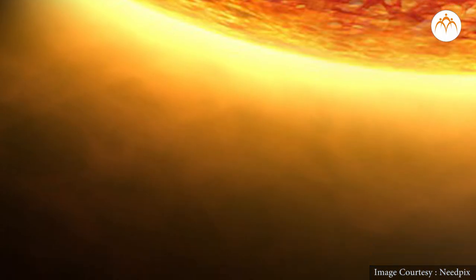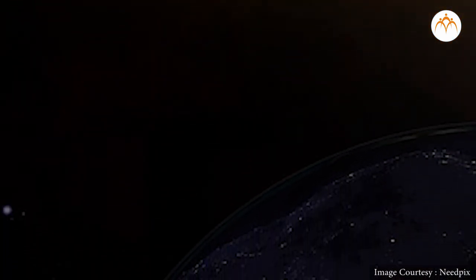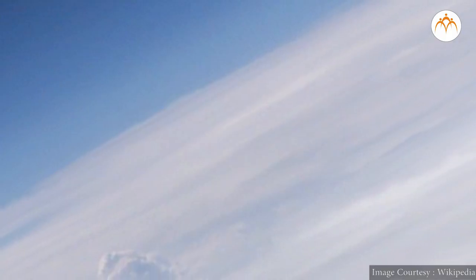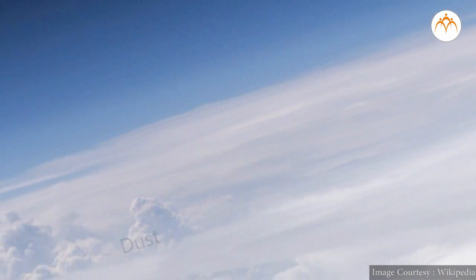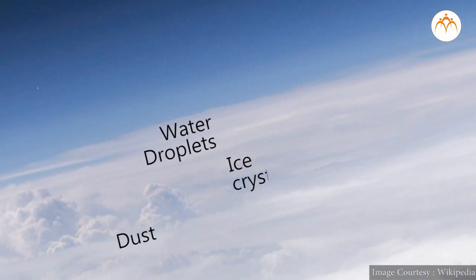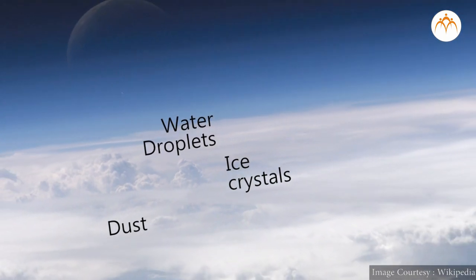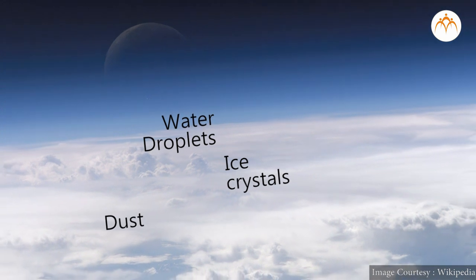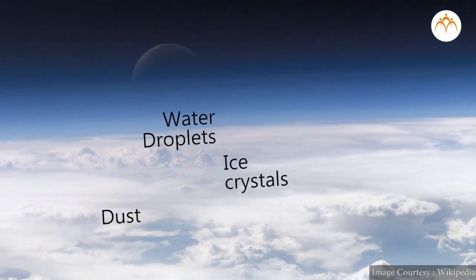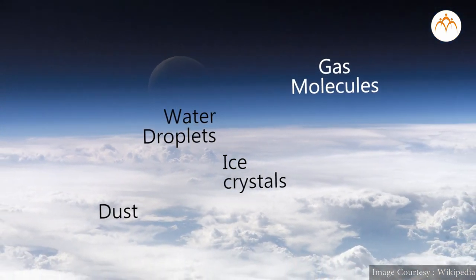When light comes from the sun, all these light waves of different wavelengths travel through empty space. When they reach earth's atmosphere, the light waves can interact with particles in the air like dust, water droplets and ice crystals. Because of the extremely small size of visible light waves, these light waves also interact with the tiny gas molecules that air has.